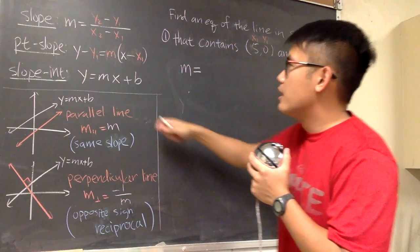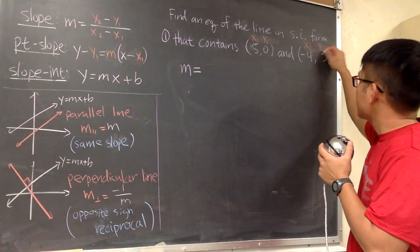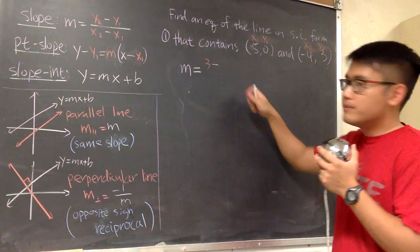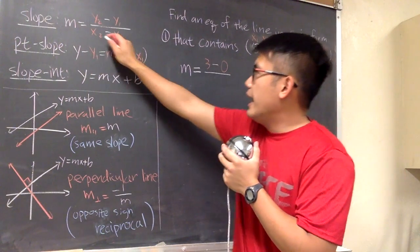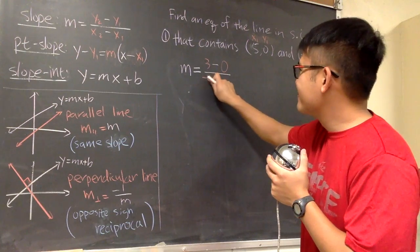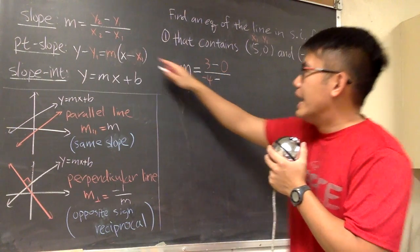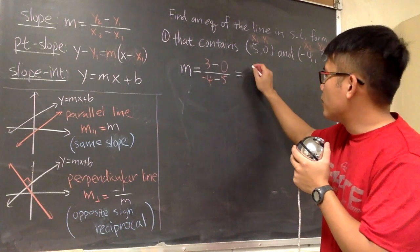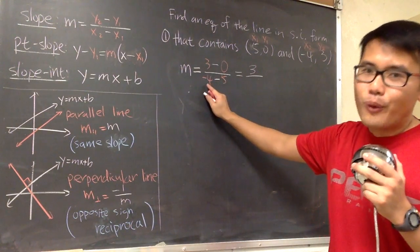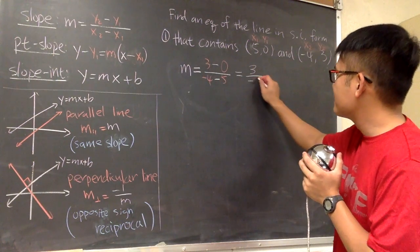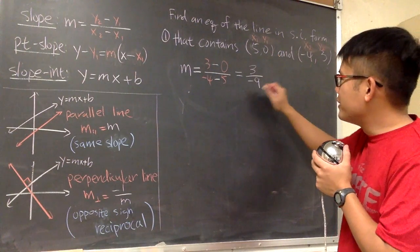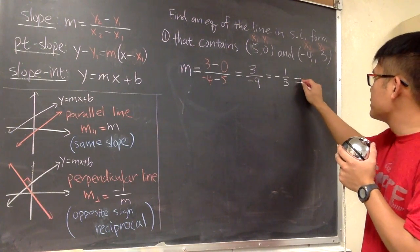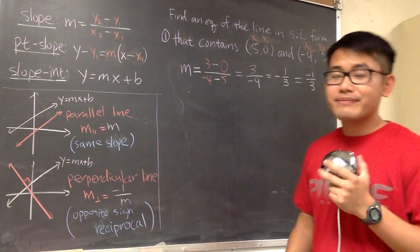This is going to be y2, which is 3 — so let's put down 3 right here. And then minus y1, which is 0. And then this is over x2, which is negative 4. And then once again we subtract x1, which is 5. So let's just put that down. Now we just have to work this out: 3 minus 0 is 3, over negative 4 minus 5 is negative 9. And as you can see, we can reduce this — 3 over negative 9 is going to be negative 1 over 3. I suggest you put the negative on the top, so this is negative 1 over 3. And we have the slope now.